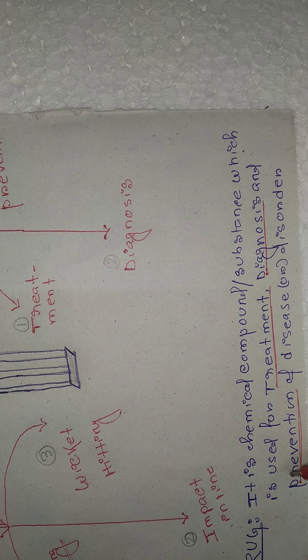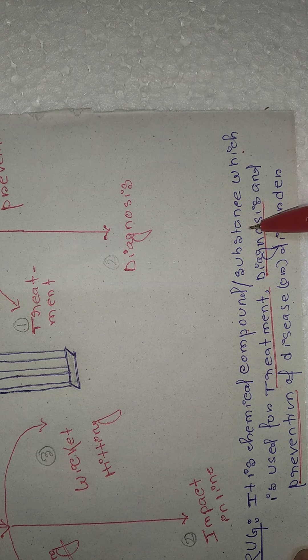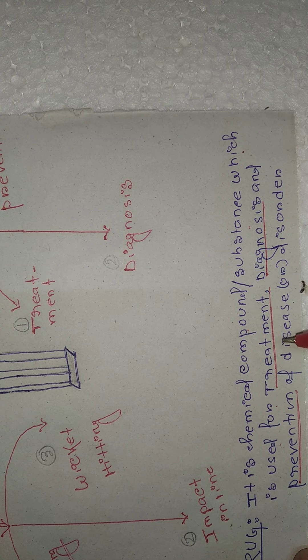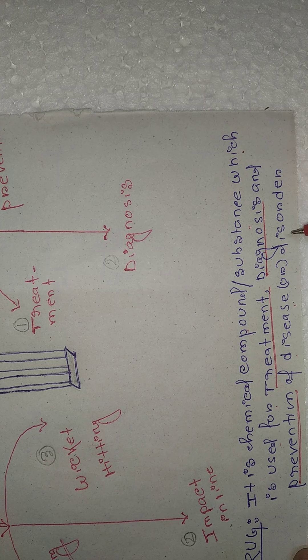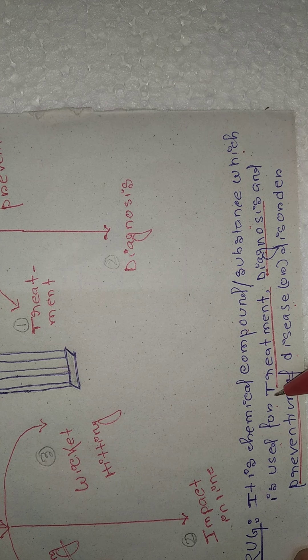Similarly, I am going to express the drug definition. Suppose you wrote an exam and your teacher says that the definition is wrong, so you go for re-evaluation. At that time, your teacher will see three things in your definition. The drug definition should be: drug is a chemical compound or chemical substance which is used for treatment, diagnosis, and prevention of disease or disorder.